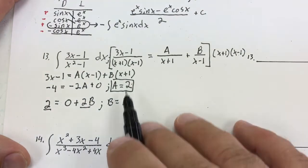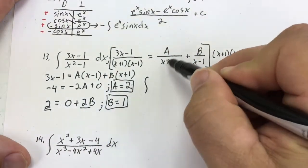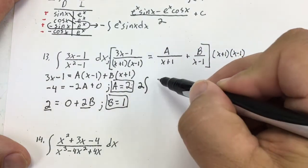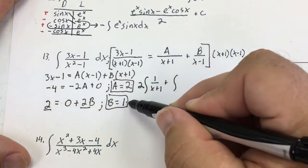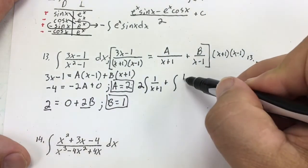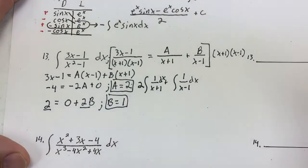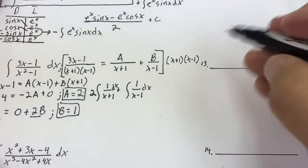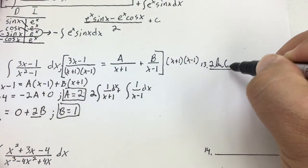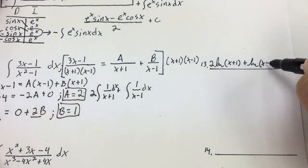So now I'm going to set up my integrals. I can put 2 for A and 1 for B. This gives me 2 times the integral of 1 over (x + 1) dx, plus the integral of 1 over (x − 1) dx. Integrating: 2 ln|x + 1| plus ln|x − 1| plus C.